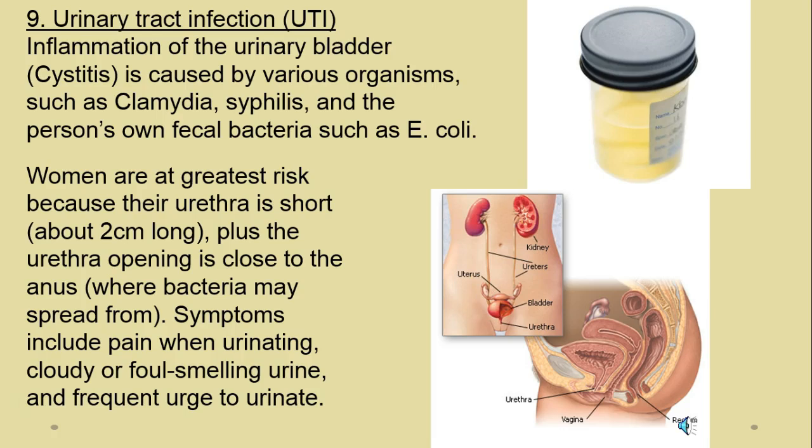A UTI — think cystitis — is synonymous. Lots of organisms cause it: chlamydia, syphilis, gonorrhea, and sometimes the person's own fecal bacteria such as E. coli. That's why we teach daughters very young to always wipe front to back, because there's almost always a small amount of fecal material in the perianal region. Women are at greatest risk because the urethra is short — about two centimeters — and close to the anus. Symptoms include pain when urinating, cloudy or bad-smelling urine, and urinary frequency.